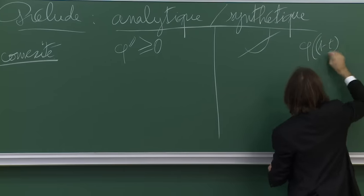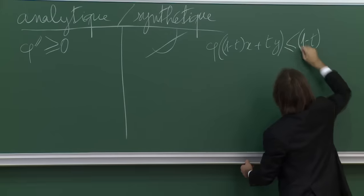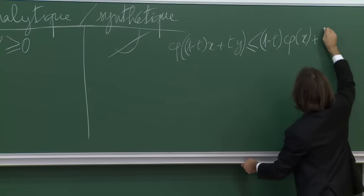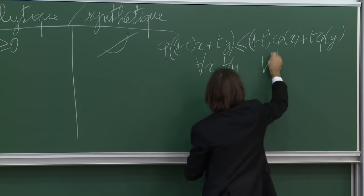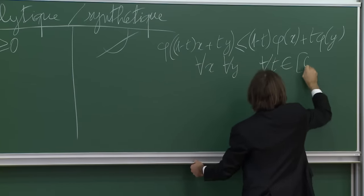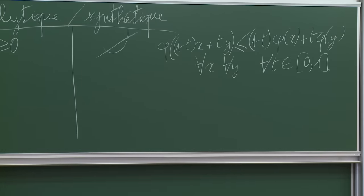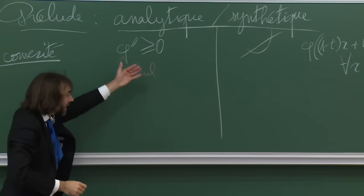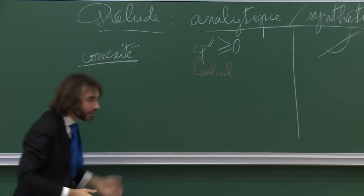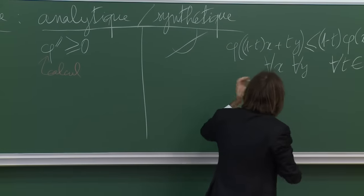La définition synthétique s'écrit : φ((1−t)x + ty) ≤ (1−t)φ(x) + tφ(y), pour tout x, pour tout y, pour tout t appartenant à [0,1]. On va appeler ça synthétique parce que, comme vous le voyez bien, on est en train de faire un calcul qui est celui de la dérivée seconde — un test assez facile pour savoir si c'est positif.